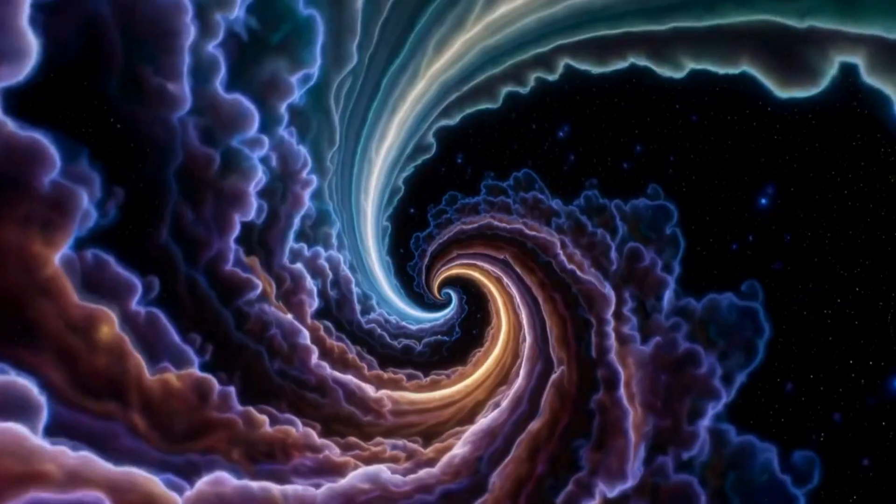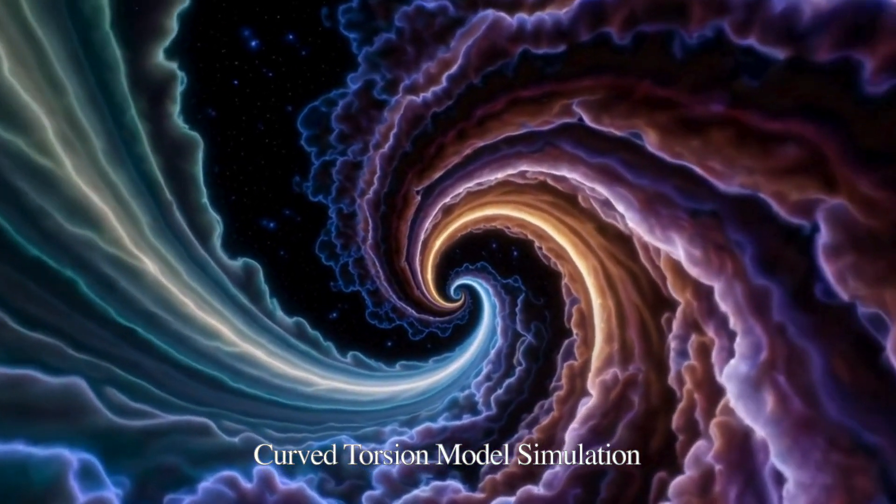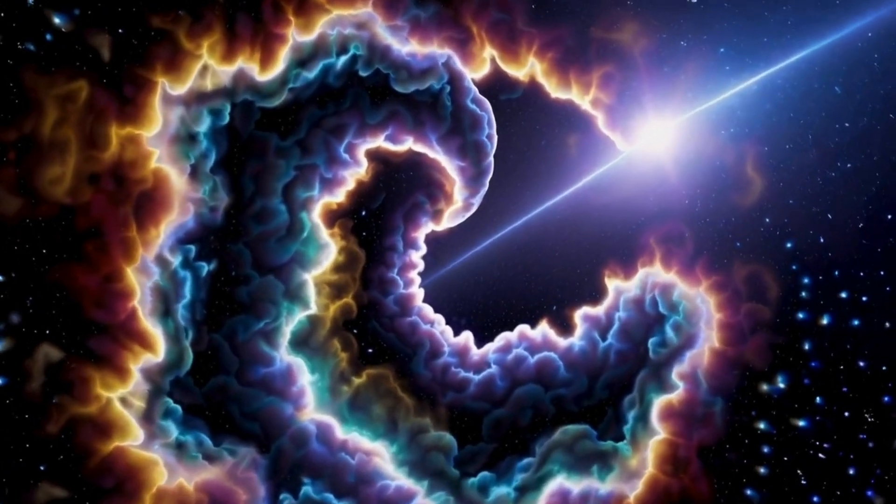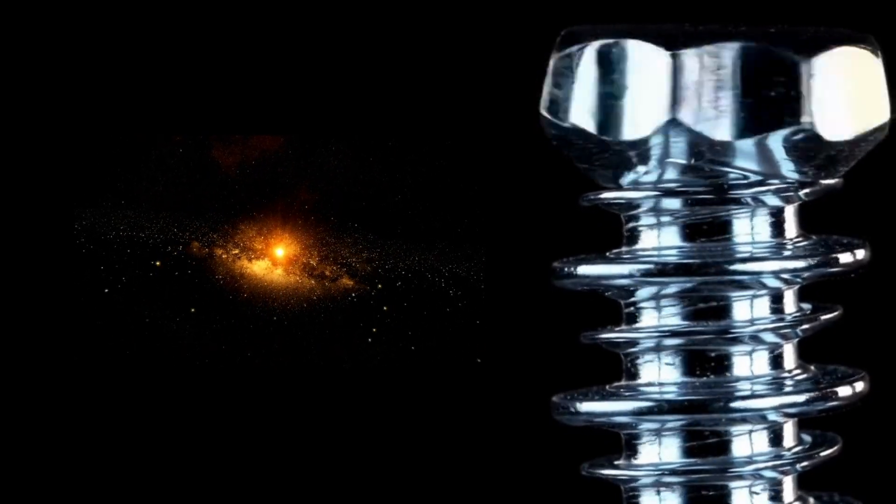These types of models are called torsion-based space-time models. They suggest that instead of a singularity inside a black hole, there could be an expanding universe. But what exactly is torsion? The easiest way to understand it is to imagine a screw or a spiral structure. A screw not only rotates around its axis, but also moves forward.